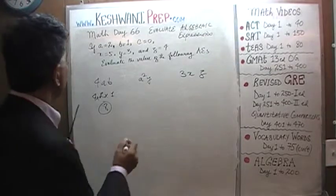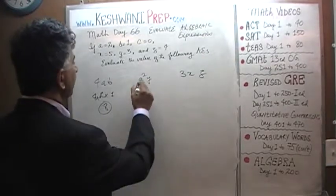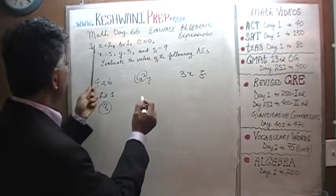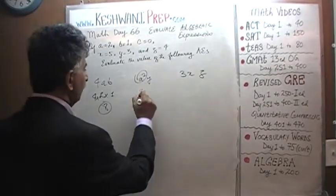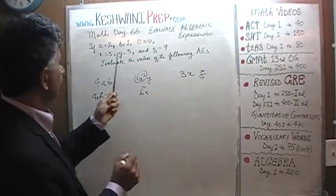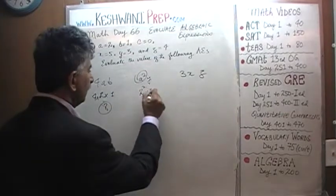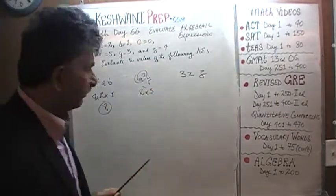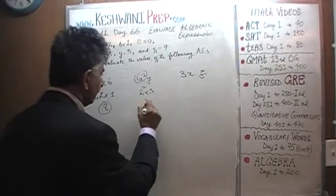a squared y. a is 2, so it's 2 squared times y which is 3. 2 squared is 4, times 3 is 12.